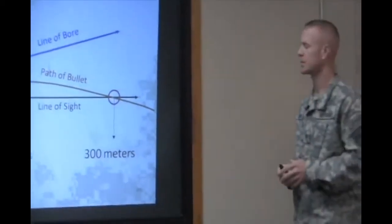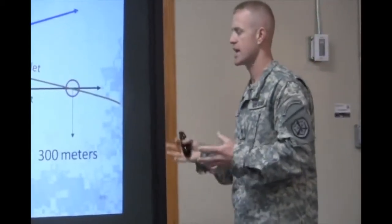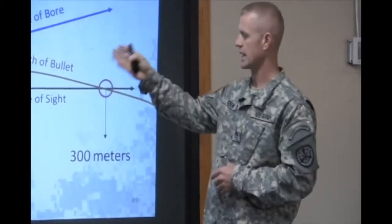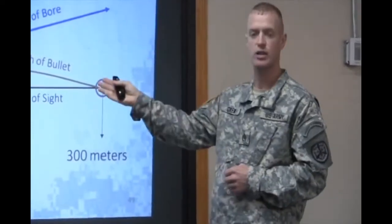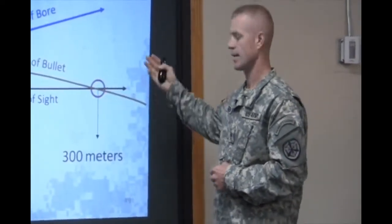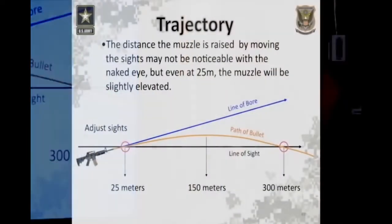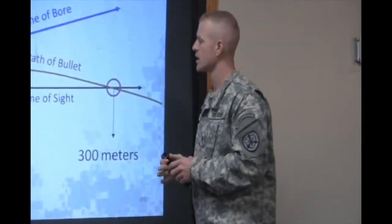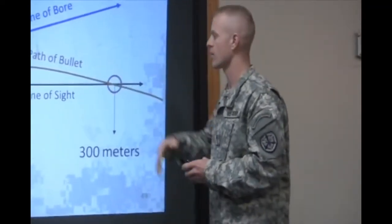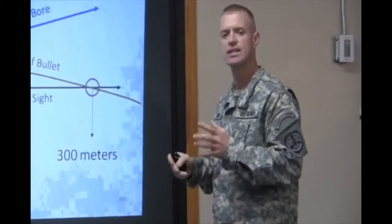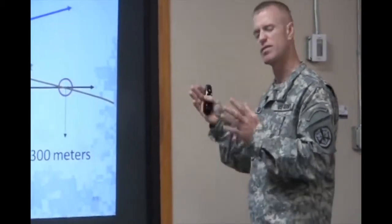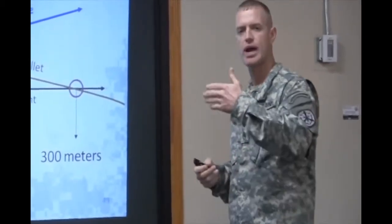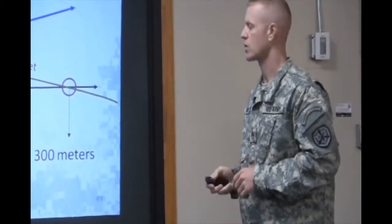With the M16 and M4 family of rifles, the path of that bullet crosses the line of sight twice — at 25 meters and at 300 meters. This is what allows us to get a 25-meter zero and consequently a 300-meter zero as well. Between 150 and 180 meters is the highest part of the trajectory of that round — normally about 7 to 10 inches above the line of sight. Therefore, when you're shooting at targets at that mid-range, it's helpful to aim just a little bit low on that target.